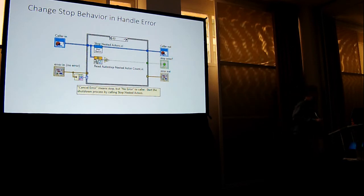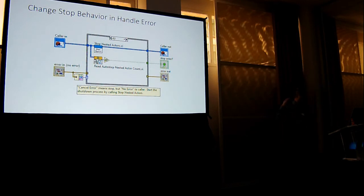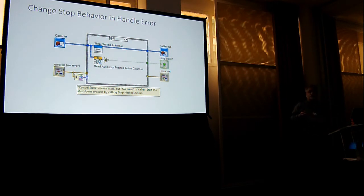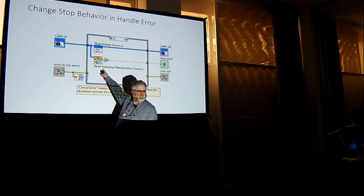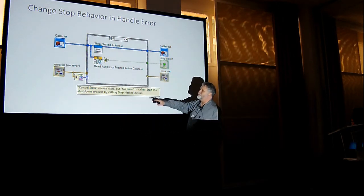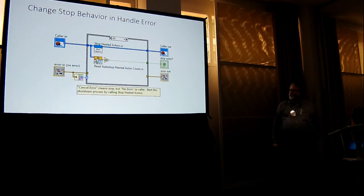So I replaced my shutdown with a stop nested — a slightly different behavior. It does exactly what the shutdown VI does, and then I check my autostop nested actor count. If my nested actor count is zero, I go ahead and stop; if not, I don't stop the actor. Has anybody seen read autostop nested actor count? I see zero hands — I expected a couple. We got that in 2016.